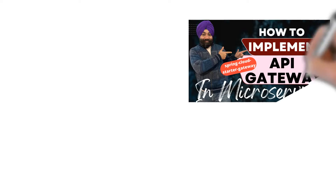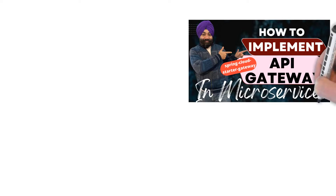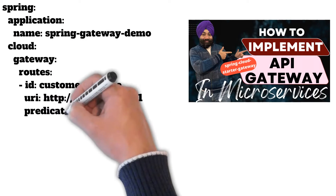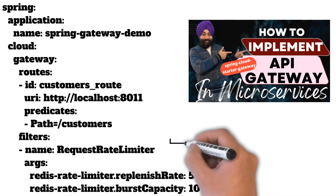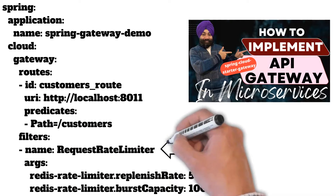We have already learned how to configure routes for a Spring Cloud Gateway. If not, please click the link at the top of the screen to check out the video for that. Now we will see how to implement rate limiting. The request rate limiter filter helps us decide whether to allow a request to proceed or to block it because its limit has been exceeded.